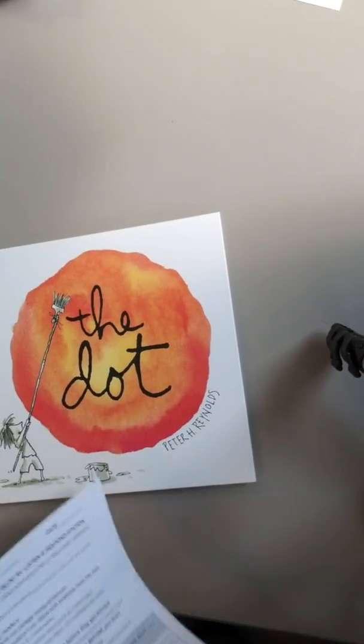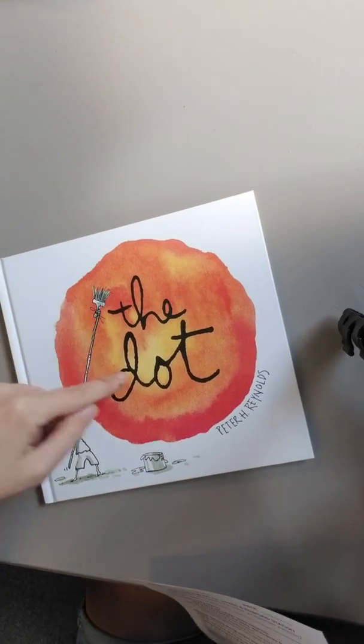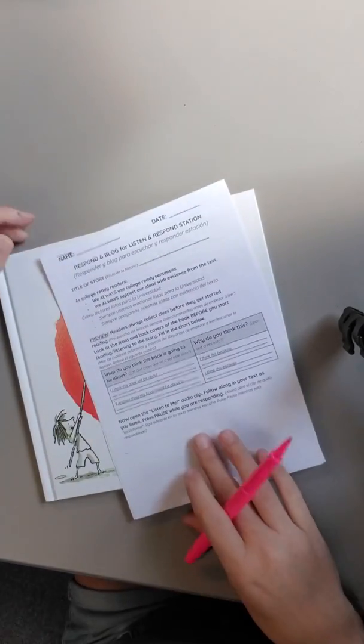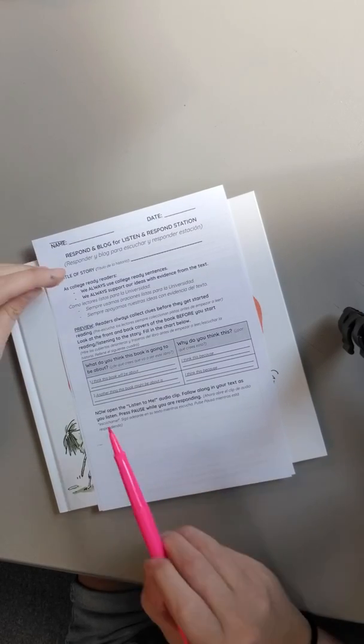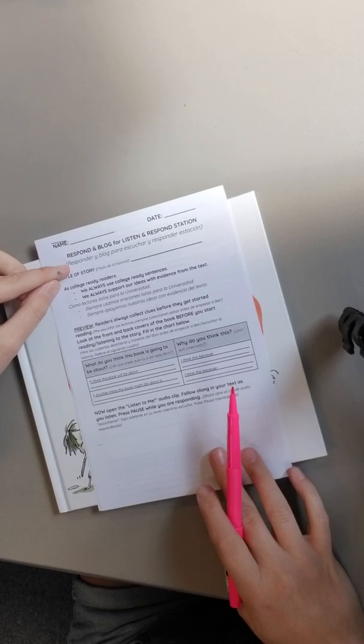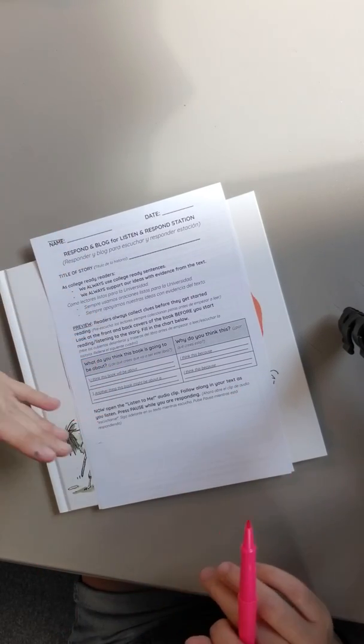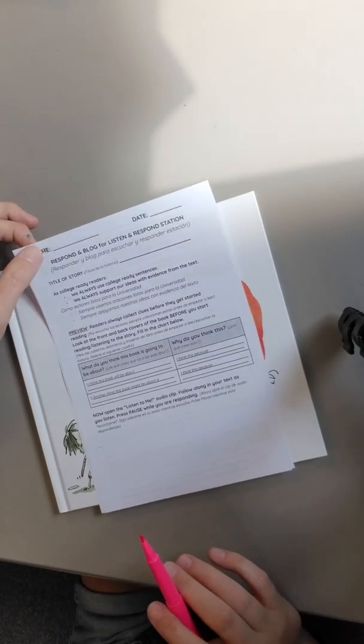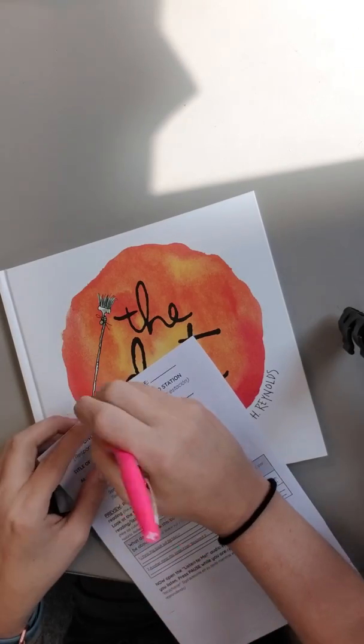This is Listen and Respond for Yellow this week. This is the dot, the book we're going to be doing. So I need you to get your respond and blog paper out. We've made a new one, so this one is a little bit smaller. I've added sentence starters and also added Spanish for you guys that might need that to help you understand a little bit better what the questions are asking. Make sure your name is at the top and we're going to put the title of the story on this line. So this title is the dot.